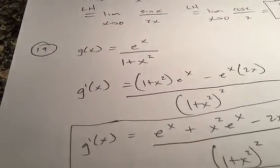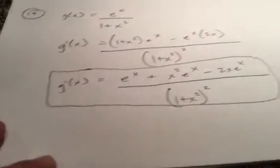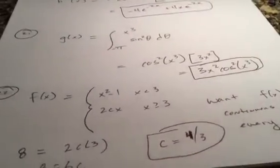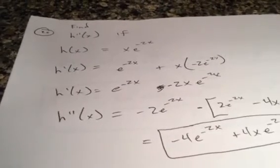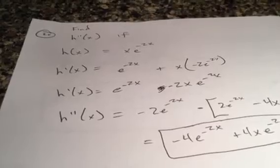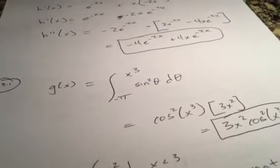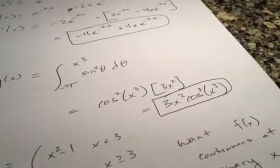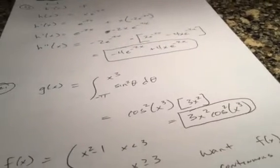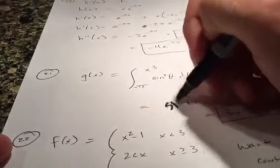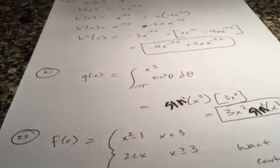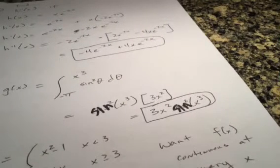On number 19, use the quotient rule to find the derivative — pause whenever you need to. For finding the second derivative, use the product rule a few times. Remember: derivative of the first times the second, plus the first times the derivative of the second. On the FTC problem, the function is defined by the integral — plug x-cubed in for theta, then take the derivative of x-cubed. Note: I made an error there — the sine should remain as sine; you just take the derivative of x-cubed.